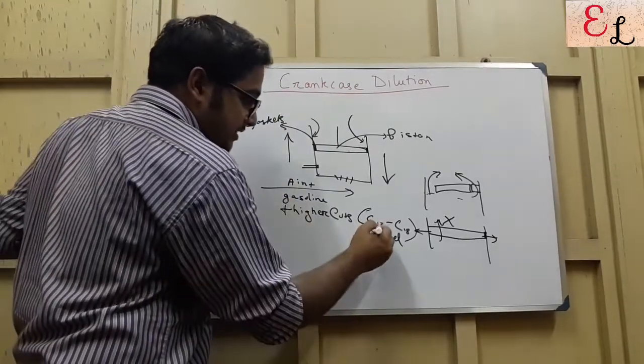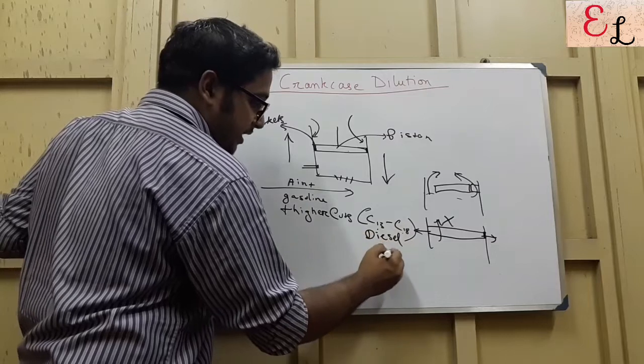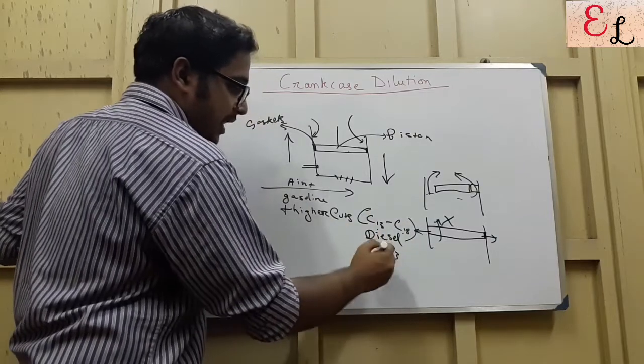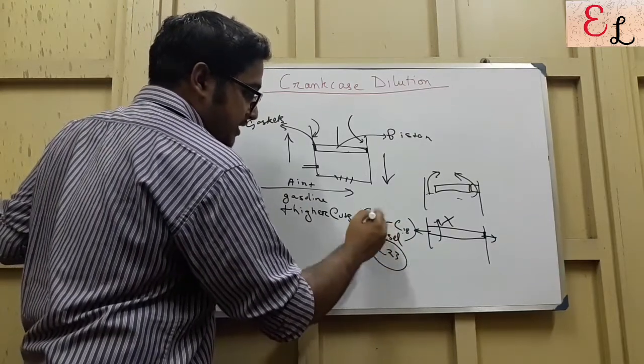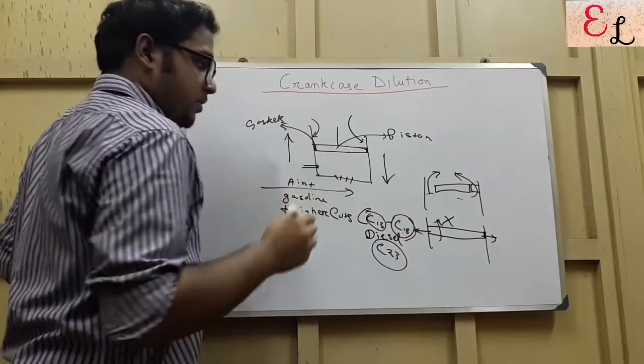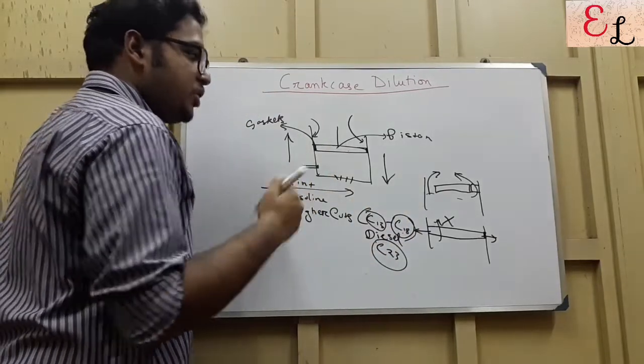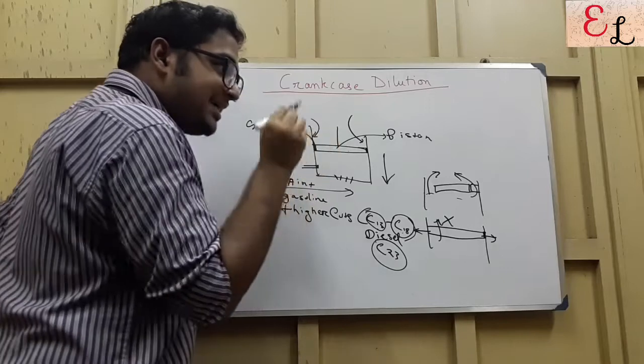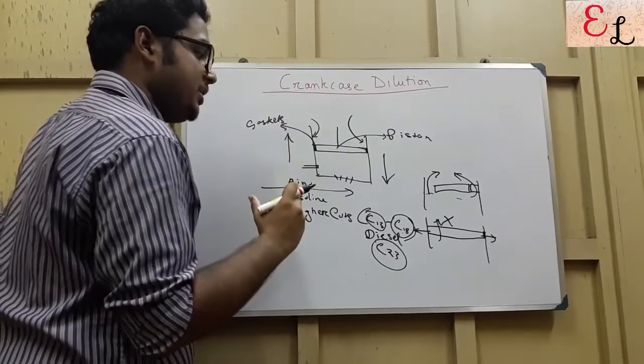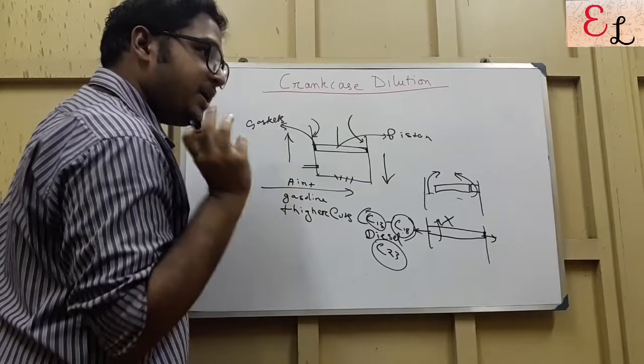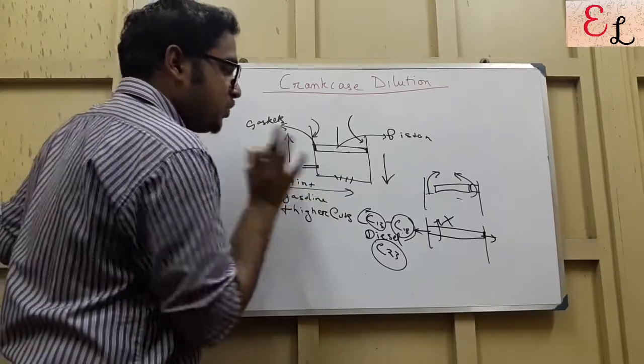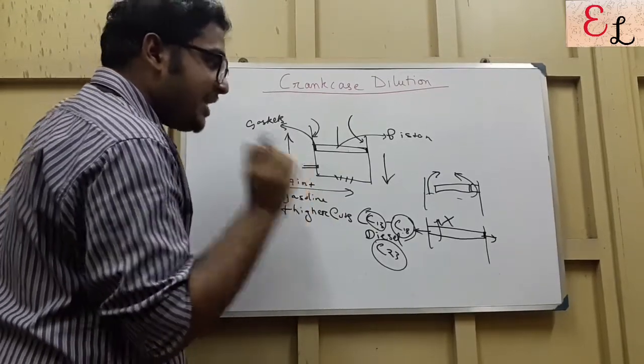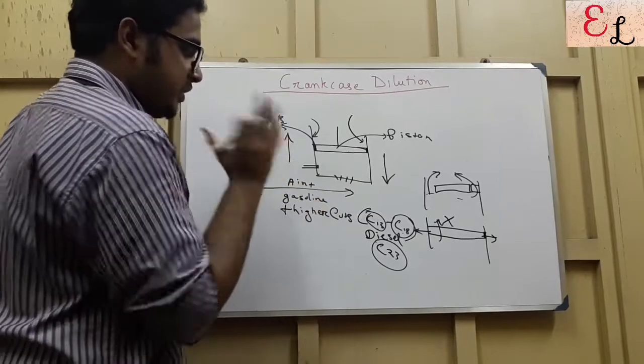Now, as we can see, this is C-13, C-18, or C-23 for diesel. These are higher cuts, and these do not have a tendency to form vapor. As we know, in a diesel auto-ignition engine, they are sent as liquid droplets, and auto-ignition is initiated rather than spark ignition, because spark ignition is necessary when there are gasoline vapors, because spark can ignite vapor mixed with air.